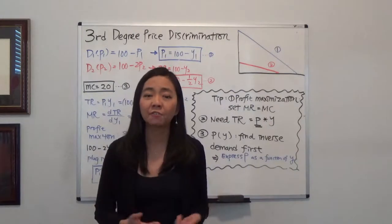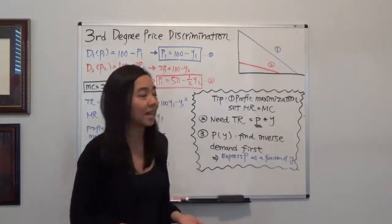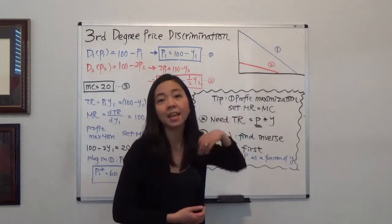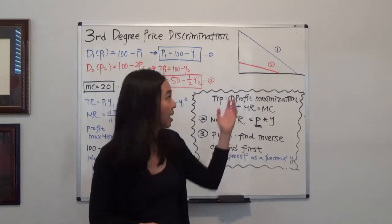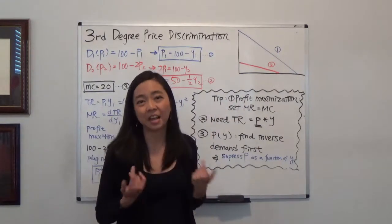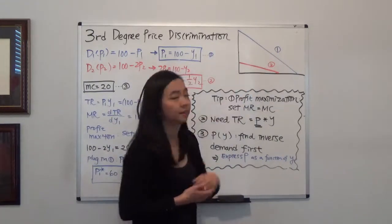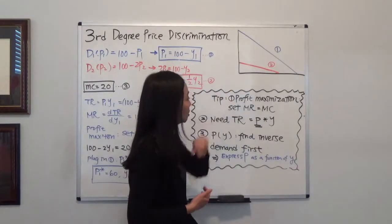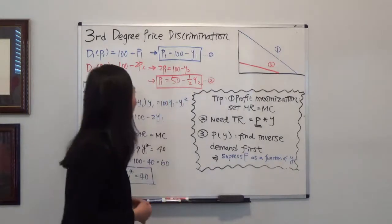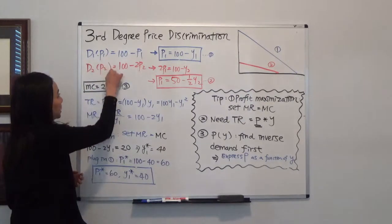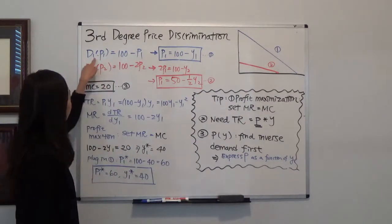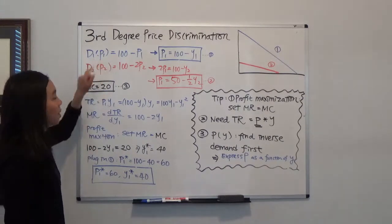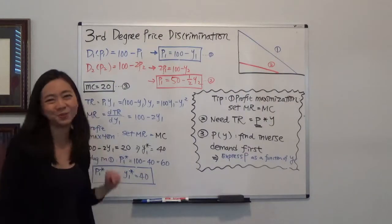We have a monopoly that is able to distinguish between market one and market two and charge a different price in each market. Market one is more price inelastic whereas market two is more price elastic. We have two demand functions, and for market one the quantity is equal to 100 minus P1.